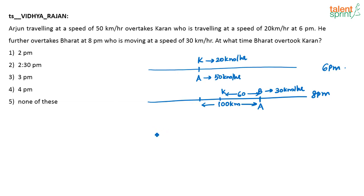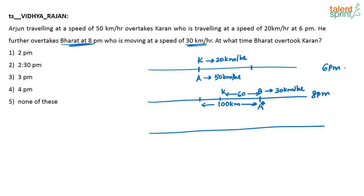Now let us see at 6 p.m., where Bharat and Karan are. Karan is at the starting point at 6 p.m. And Bharat is at the 100 km mark at 8 p.m. At 6 p.m., Bharat is travelling at 30 km per hour, so in the previous 2 hours — from 6 p.m. to 8 p.m. — Bharat would have travelled 30 into 2, which is 60 km.